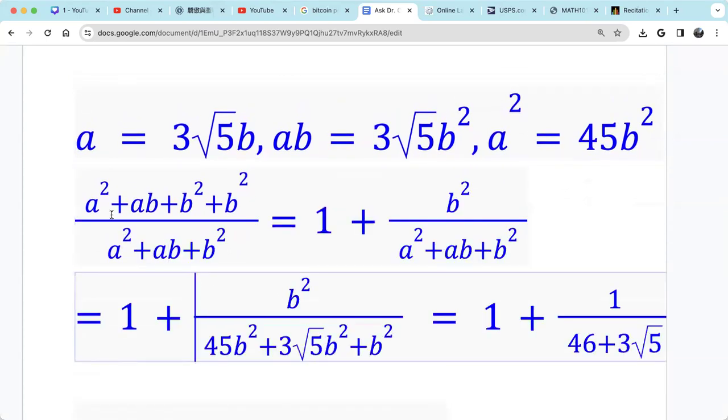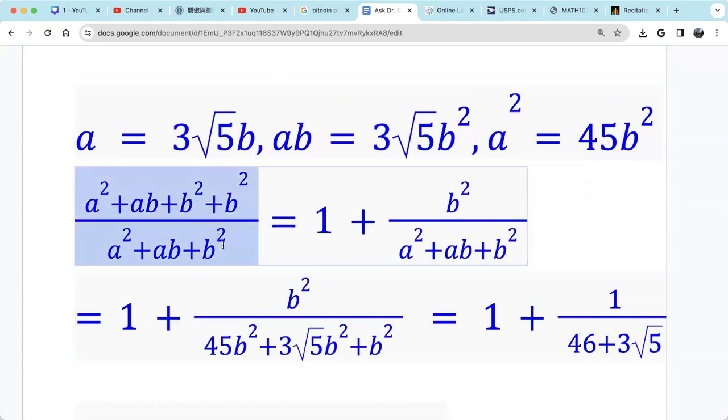Let's look at this expression itself. We can simplify it because the numerator and denominator only differ by B squared. So 2B squared, we can write it as B squared plus B squared.